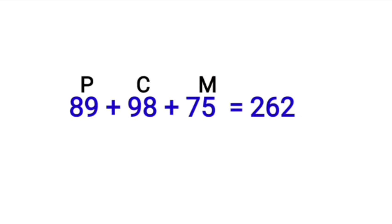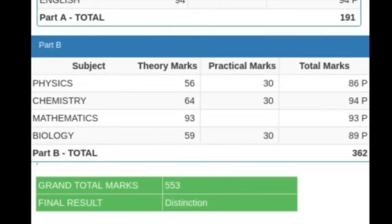So let's add all PCM marks. For example: Physics 89, Chemistry 98, Maths 75. Adding them: 89 plus 98 plus 75 equals 262. For engineering or medical course selection, only your PCM subjects matter. Your overall percentage will not be checked when going for college admissions or deciding your KCT rank.